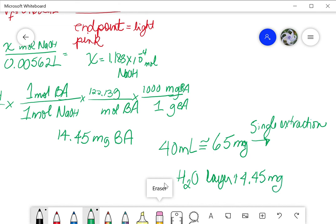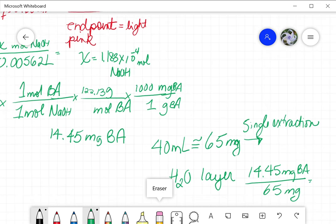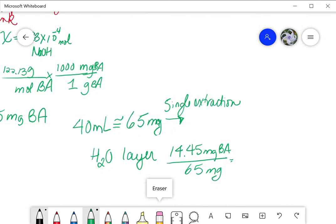You'll be doing calculations like saying what percent of the sample is in the water layer and what percent is in the organic layer. So for this one, there's 14.45 milligrams of benzoic acid in the water layer over the total of 65 milligrams, and we can get the percent for this that was in the water layer.